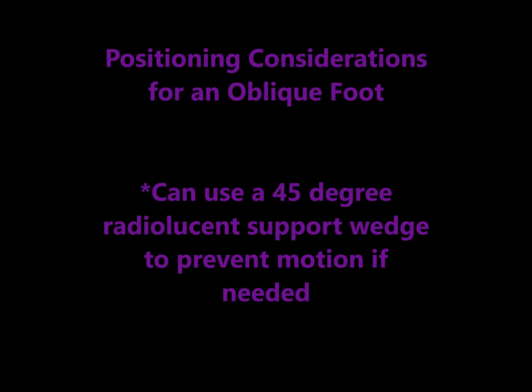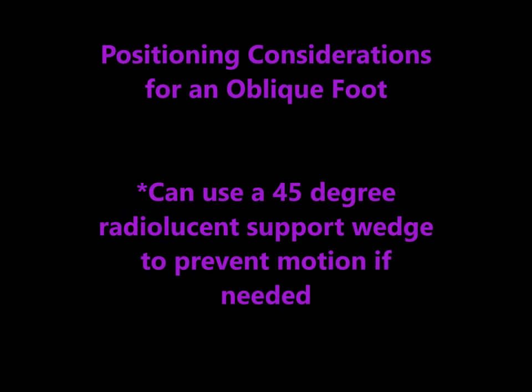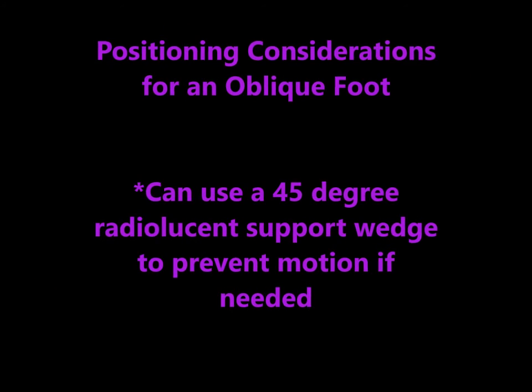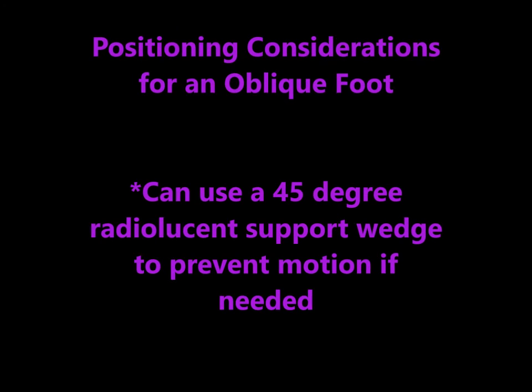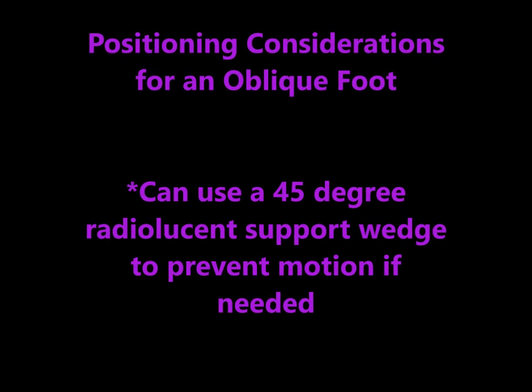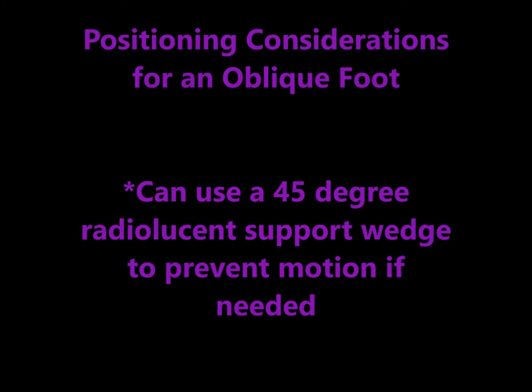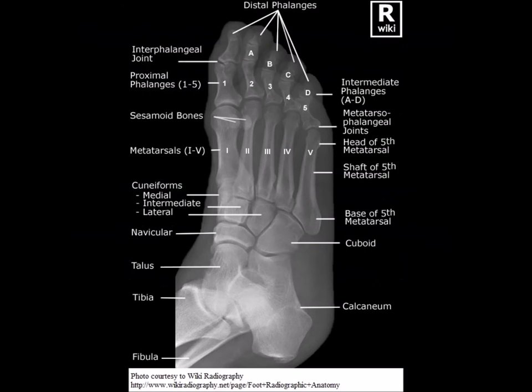A positioning consideration for the oblique film is that if needed a radiolucent support block can be used. For the oblique film, the entire foot should be demonstrated from distal phalanges to posterior calcaneus and proximal talus.